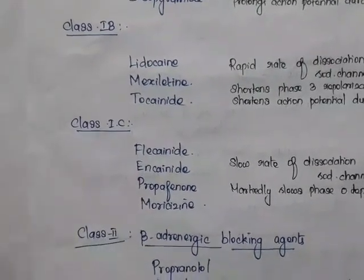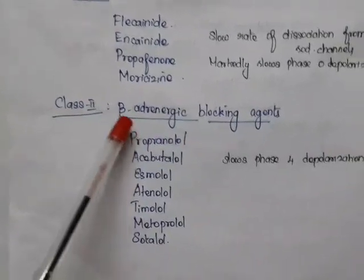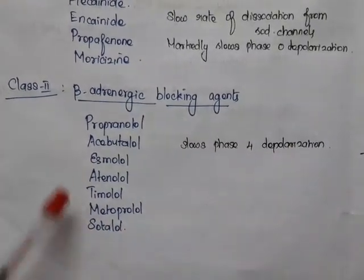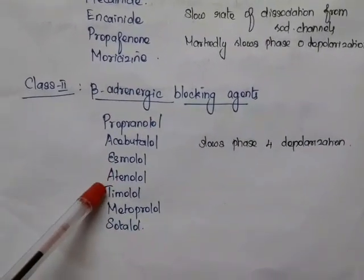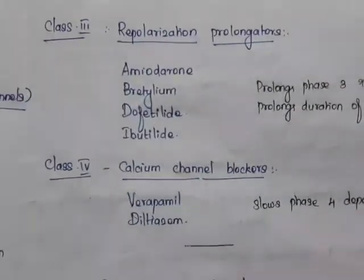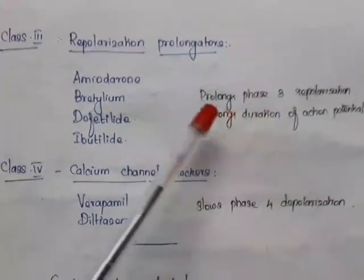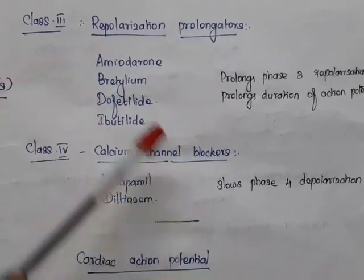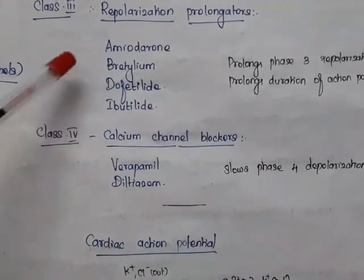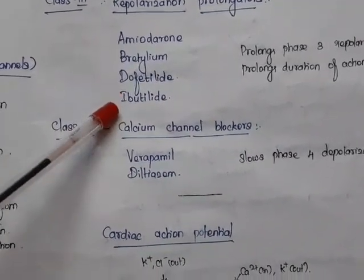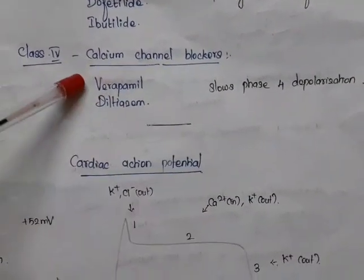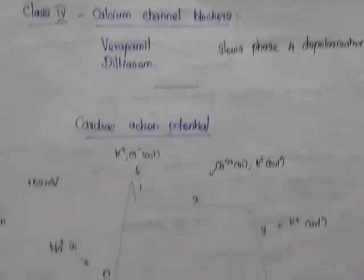Class 2 agents are beta adrenergic blocking agents; they slow phase 4 depolarization. Examples include propranolol, acebutolol, esmolol, labetalol, timolol, metoprolol, and sotalol. Class 3 agents are repolarization prolongators; they prolong phase 3 repolarization and prolong the duration of action potential. Examples are amiodarone, bretylium, dofetilide, and ibutilide. Class 4 — calcium channel blockers — slow phase 4 depolarization; examples are verapamil and diltiazem.